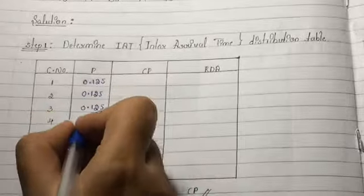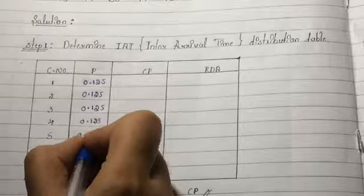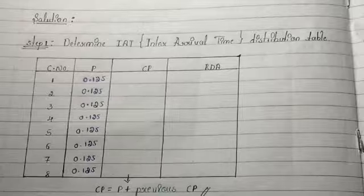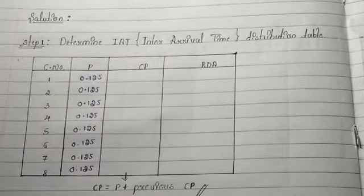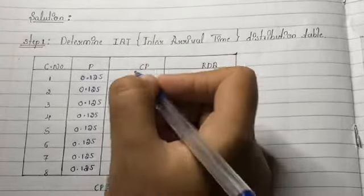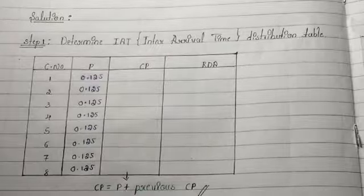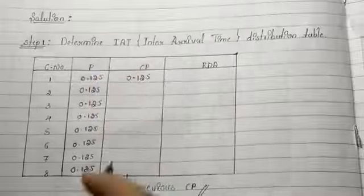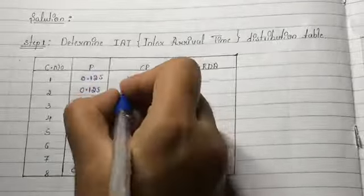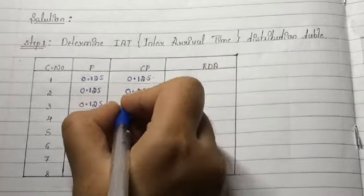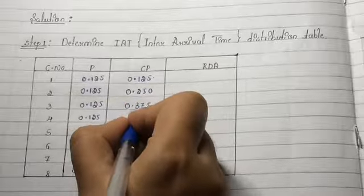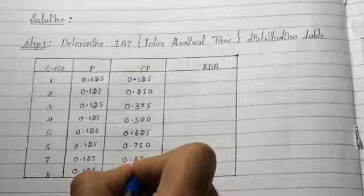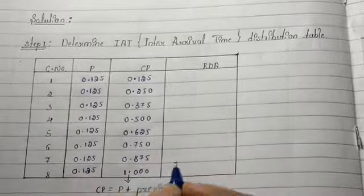The probability for each customer is 1/8, which equals 0.125, so we write 0.125 for all customers. Cumulative probability is calculated as: cumulative probability = probability + previous cumulative probability. For the first customer, 0.125 + 0 = 0.125. Then 0.125 + 0.125 = 0.250, then 0.375, 0.500, 0.625, 0.750, 0.875, and finally 1.000.